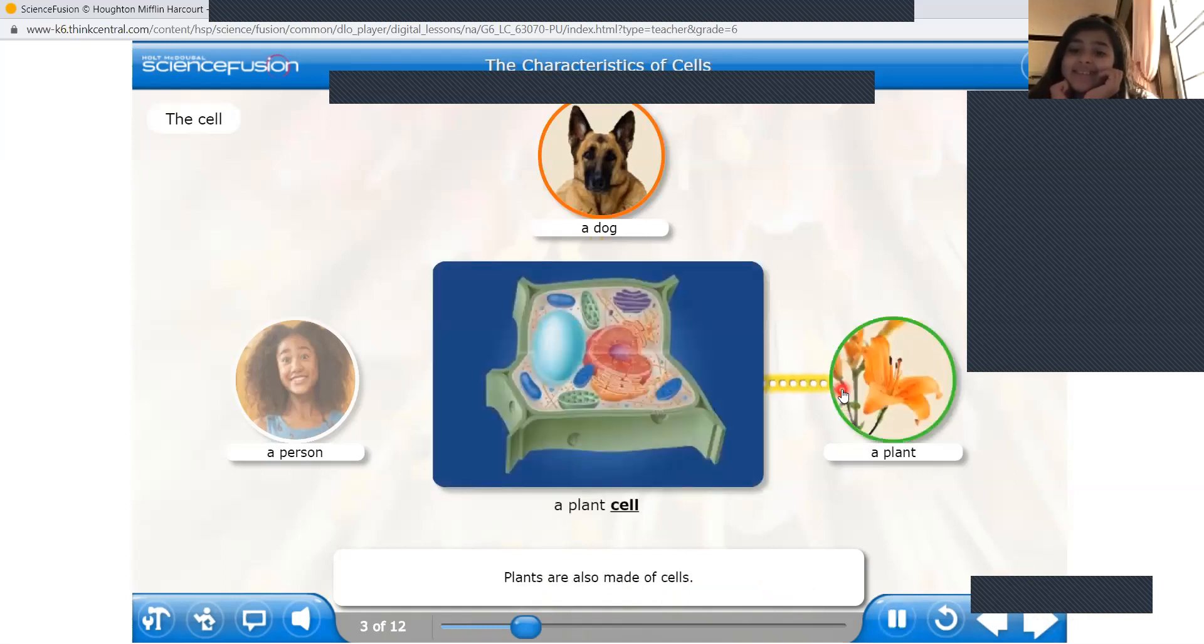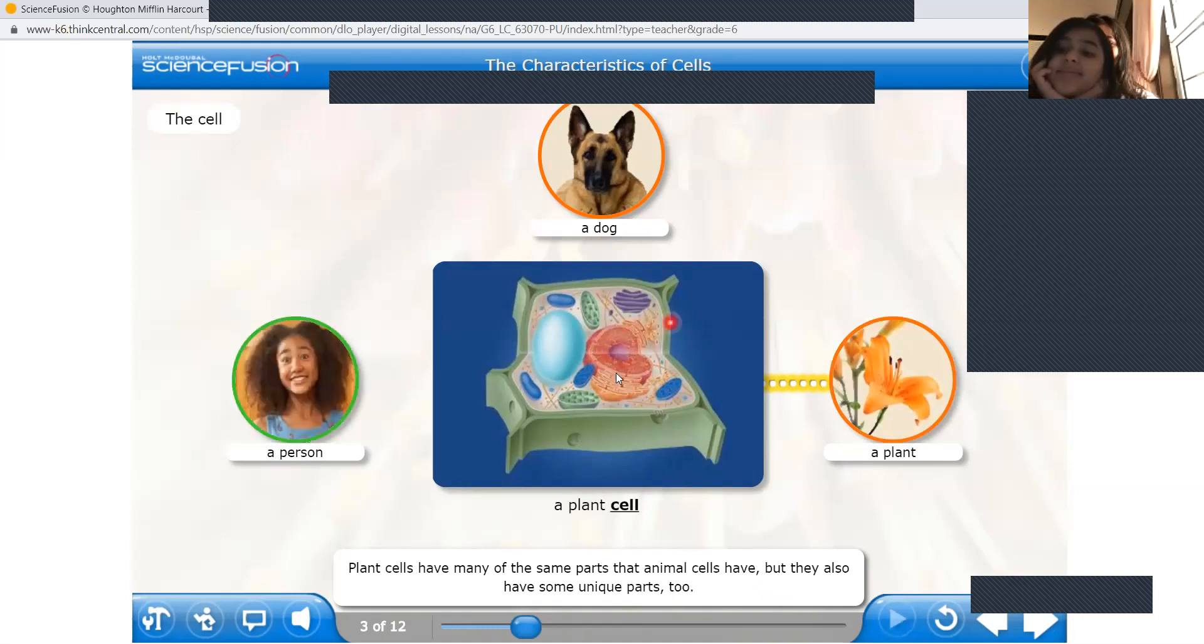Plants are also made of cells. Plant cells have many of the same parts that animal cells have, but they also have some unique parts too. See, plant cells also look like animal cells, but you know that the plant makes own food. The animal does not make own food. So there has to be something different in plant cell which lets it see just the sunlight and water and it makes its own food. That's what there has to be difference between animal and plant cell. But all these cells are called as eukaryotic cells.